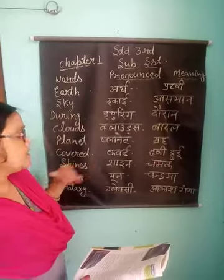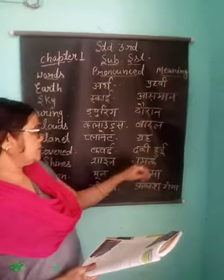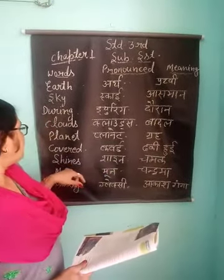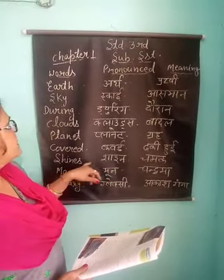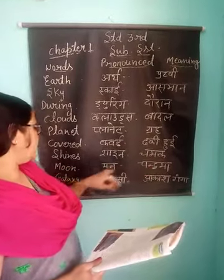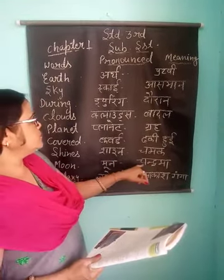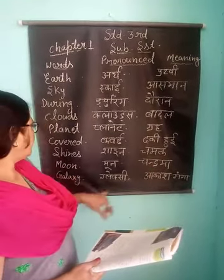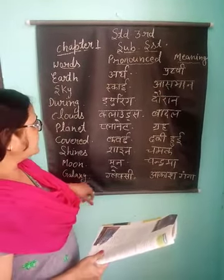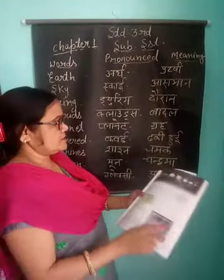C-O-V-E-R-E-D: Covered means Dharaki V. S-H-I-N-E-S: Shines means Chama. M-O-O-N: Moon means Chandraman. Galaxy means Aakaz Ganga.